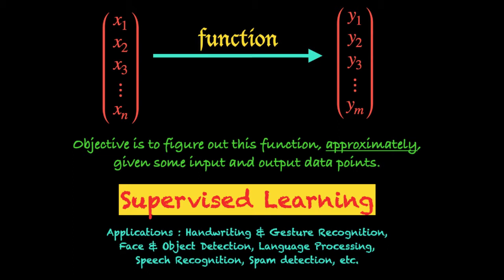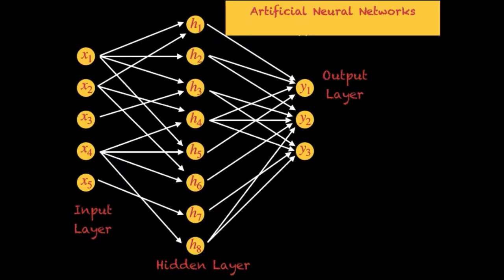We know from the universal approximation theorem that using ANNs we can find a solution or approximate this function to a very high degree of accuracy — and that is precisely why ANNs have become such an important tool for supervised learning. Supervised learning has many applications, some listed on your screen: for example, handwriting and gesture recognition, face and object detection, language processing, speech recognition, spam detection, and many others.